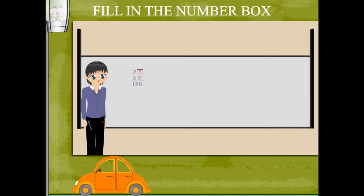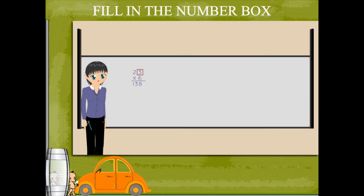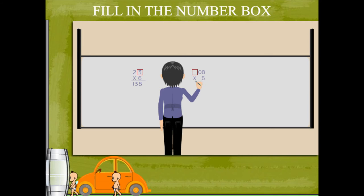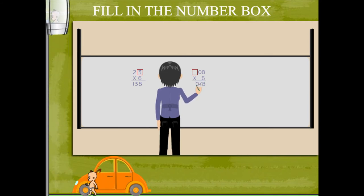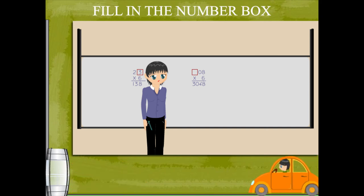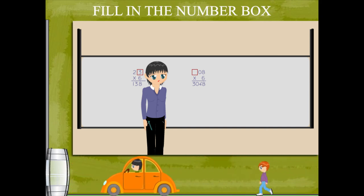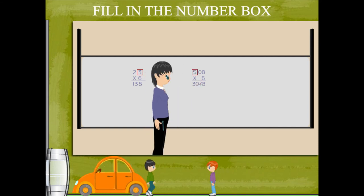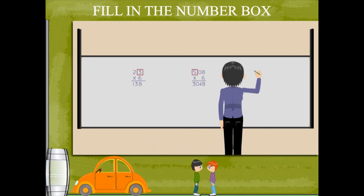So 23 into 6 equals 138. Now she writes the next problem: blank 0 8 multiplied by 6, with the product 3048. Nancy ma'am uses her tables to fill up the gap with 5. The next question is 571 plus 1 blank 6 plus 254, and the sum is 961.